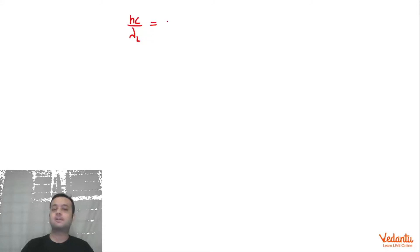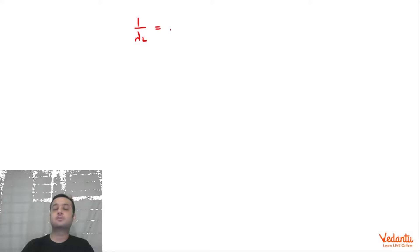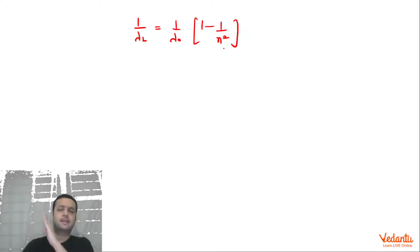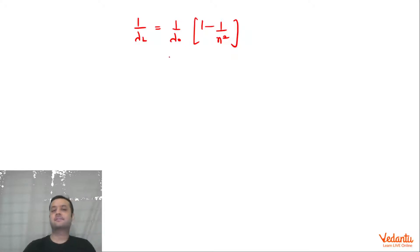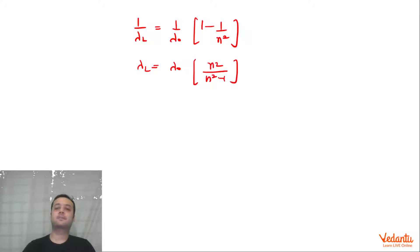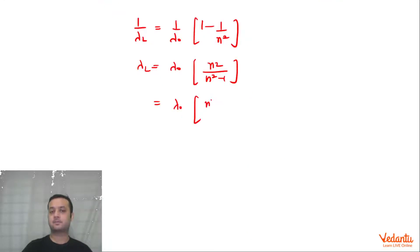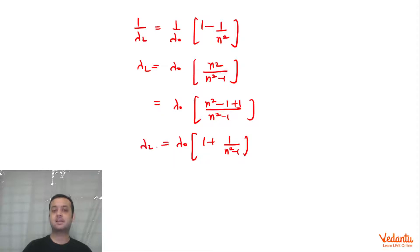For the Lyman series: 1/λ = (1/λ₀) × (1 − 1/n²), where 1/λ₀ = R (the Rydberg constant corresponding to the n = ∞ to 1 transition). Taking the reciprocal, λ = λ₀ × n²/(n² − 1). This is the expression for the Lyman series wavelength.